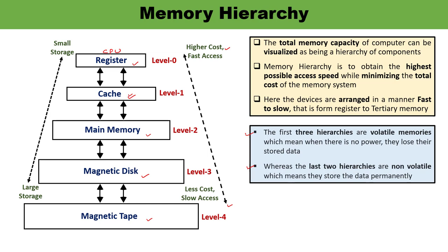Cache is generally on the order of megabytes and implemented using static RAM. Level 2 is main memory or primary memory, which directly communicates with the CPU and auxiliary memory devices through the I/O processor. It is the main storage unit of the computer and is implemented using dynamic RAM. Level 3 is magnetic disk, also known as secondary storage, used as backup storage. Magnetic disks in computers are usually fabricated using circular plates mounted on a spindle.